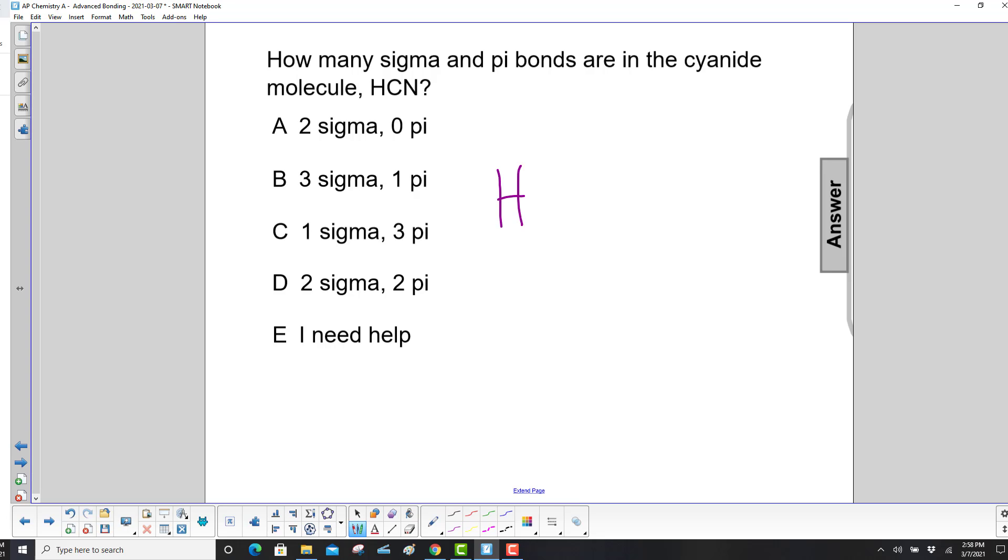So, put H, C, N. Valence electrons 1, 4, and 5. So we have that bond there. That takes care of hydrogen.